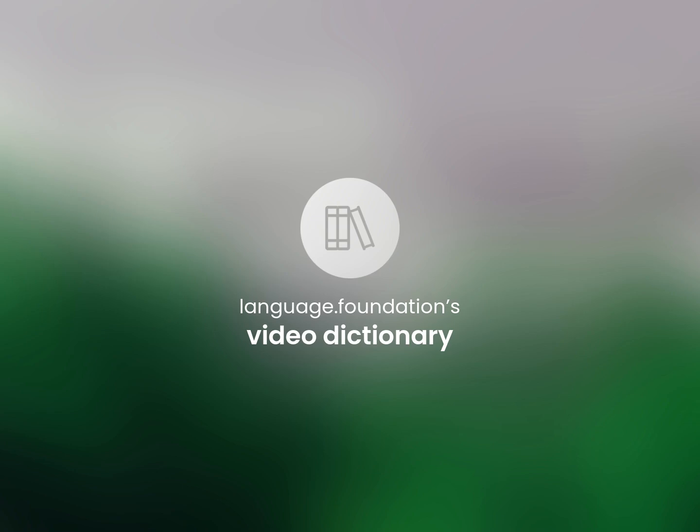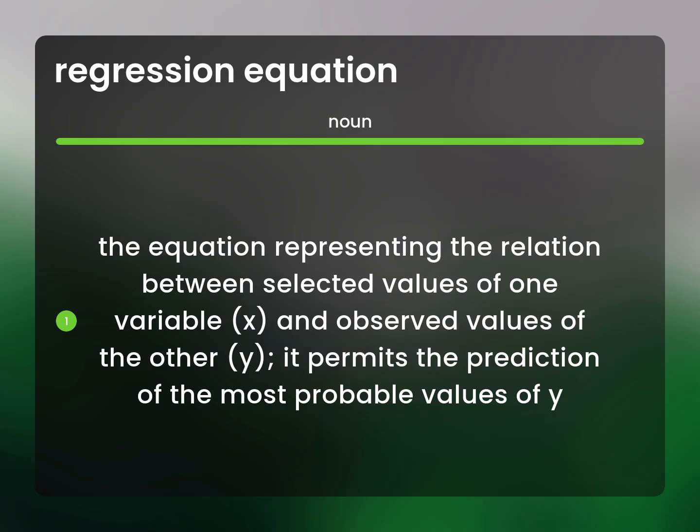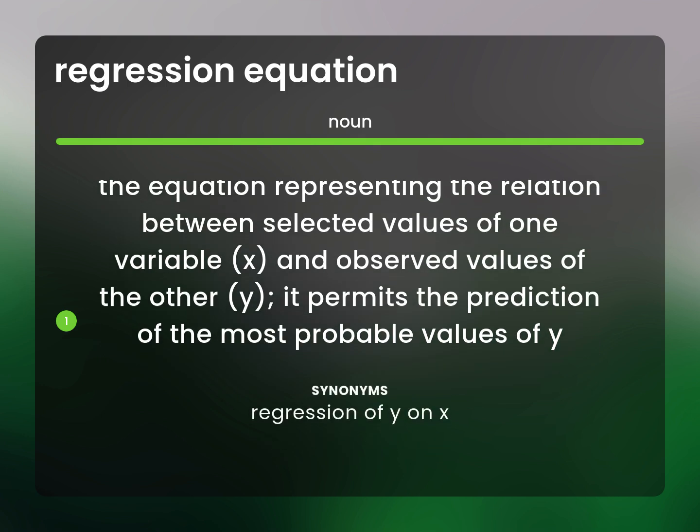Language.Foundation's Video Dictionary, helping you achieve understanding. The equation representing the relation between selected values of one variable, x, and observed values of the other, y. It permits the prediction of the most probable values of y. Regression of y on x.